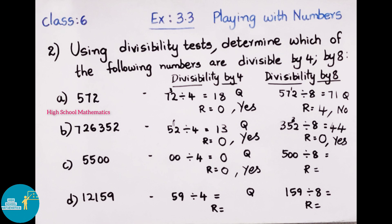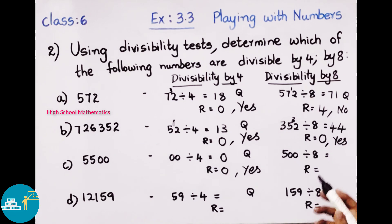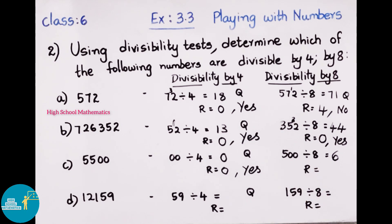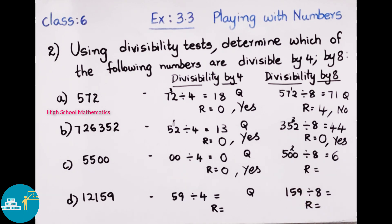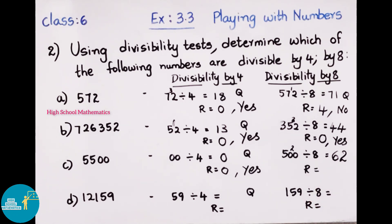Now checking if 5,500 is divisible by 8. Take the last 3 digits: 500. Dividing 500 by 8: 8 times 2 is 16; remainder gives us 20. 8 times 2 is 16; 20 minus 16 gives remainder 4. Since remainder is 4, it is not divisible by 8.